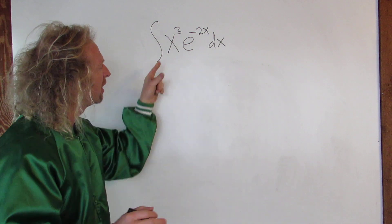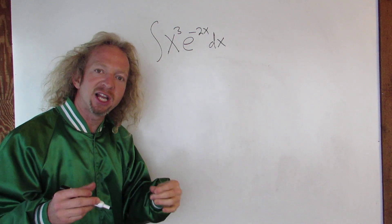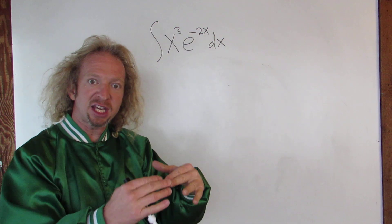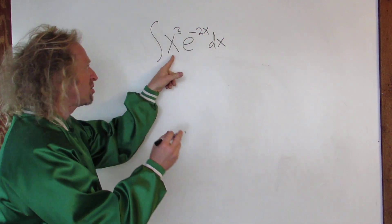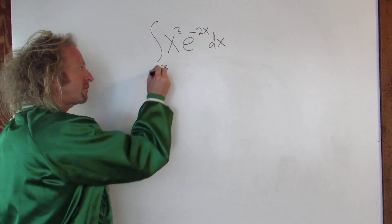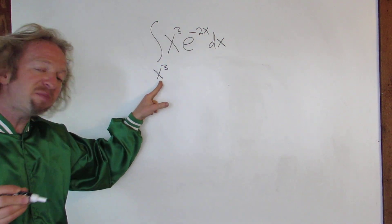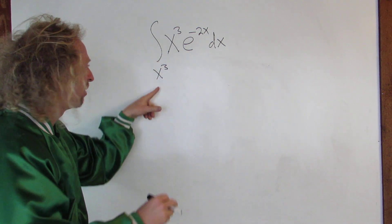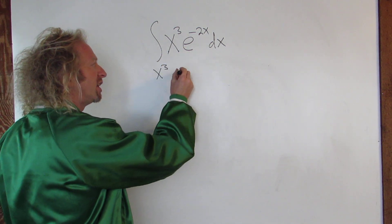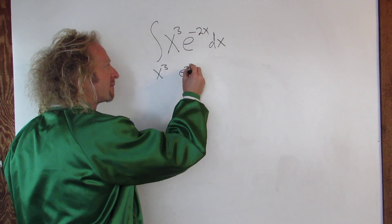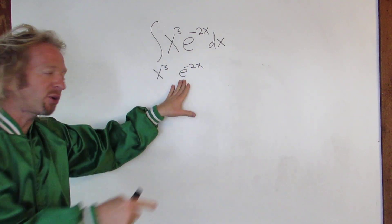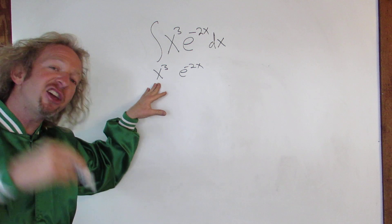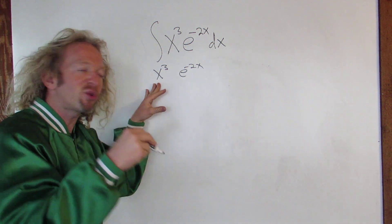So when you're doing tabular, you pick one that you're going to differentiate. After repeated differentiation, you have to get zero. So you start with x cubed — that's the piece that after repeated differentiation is going to be zero. And then here, this is the one you're going to integrate. So you pick one to differentiate, pick one to integrate. Then you just start taking derivatives.